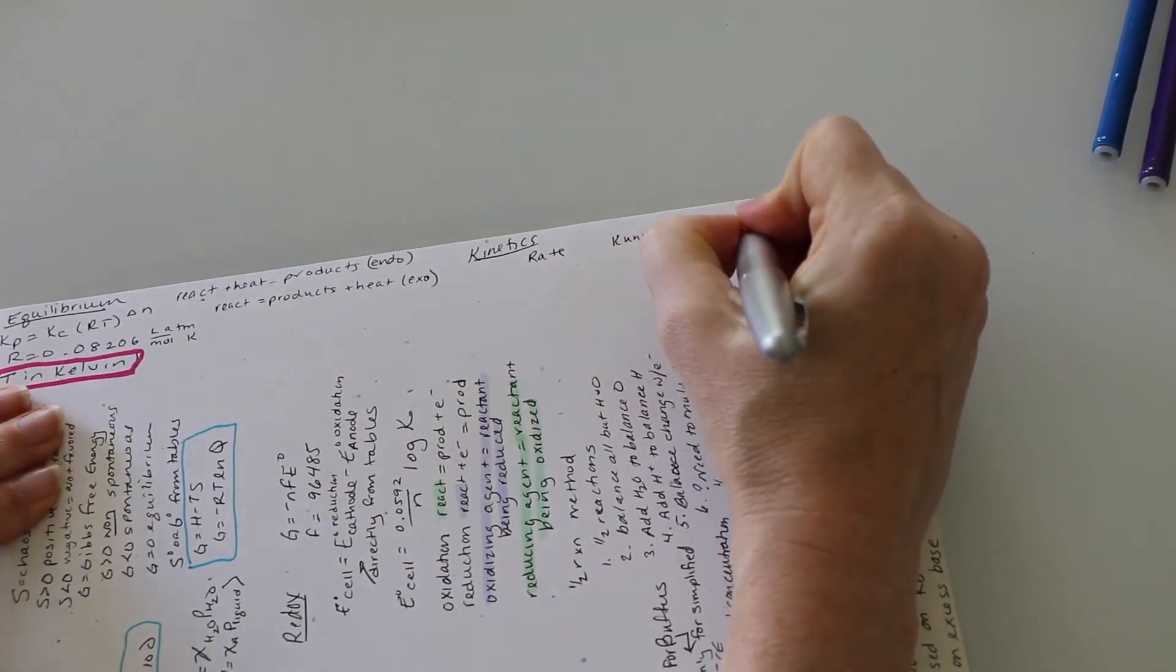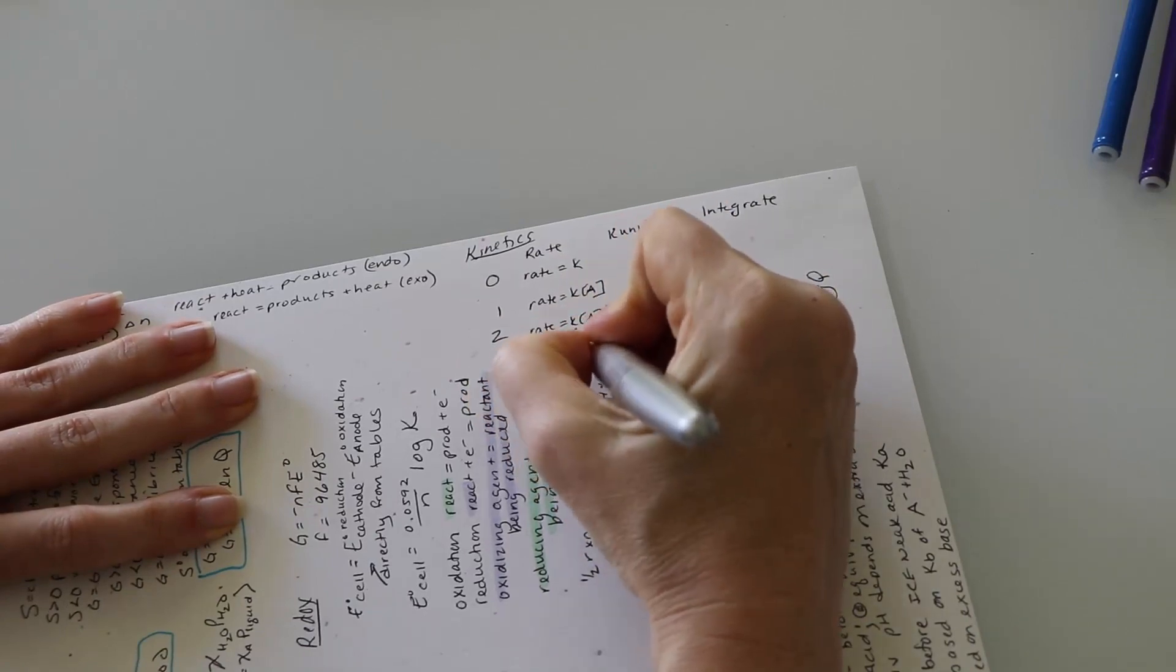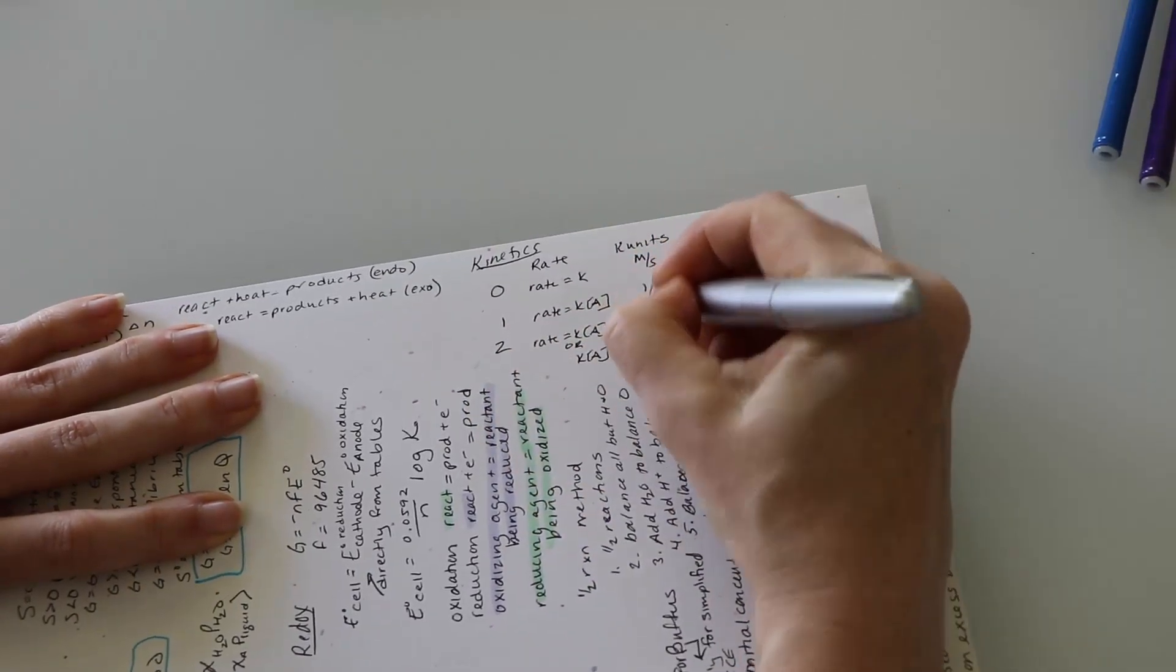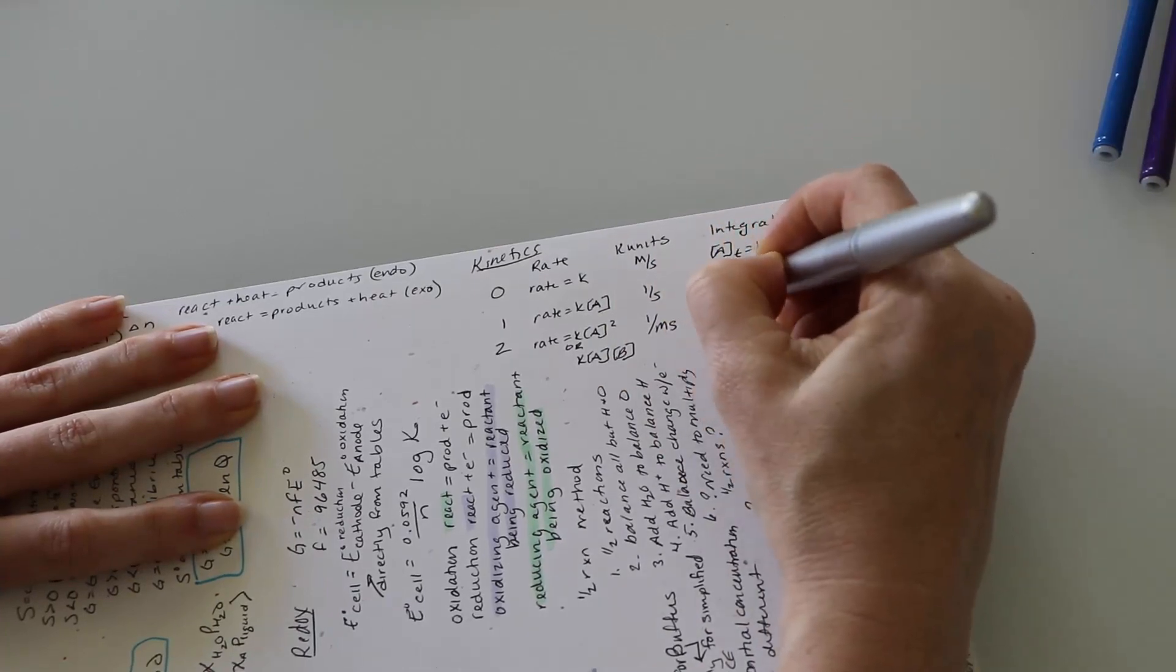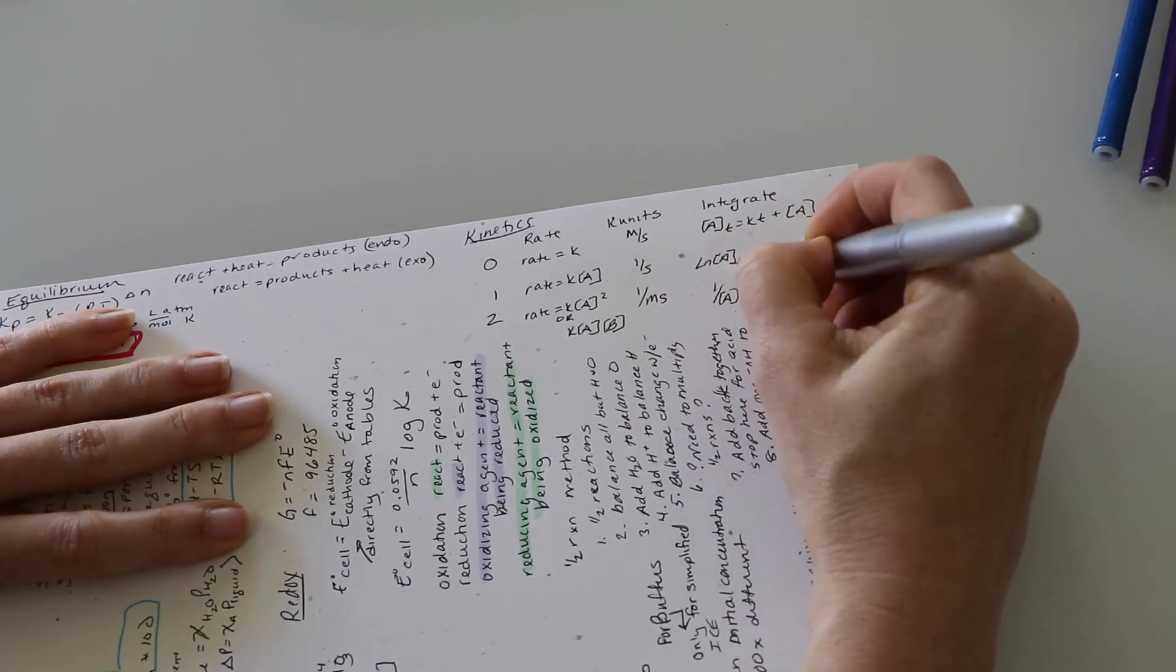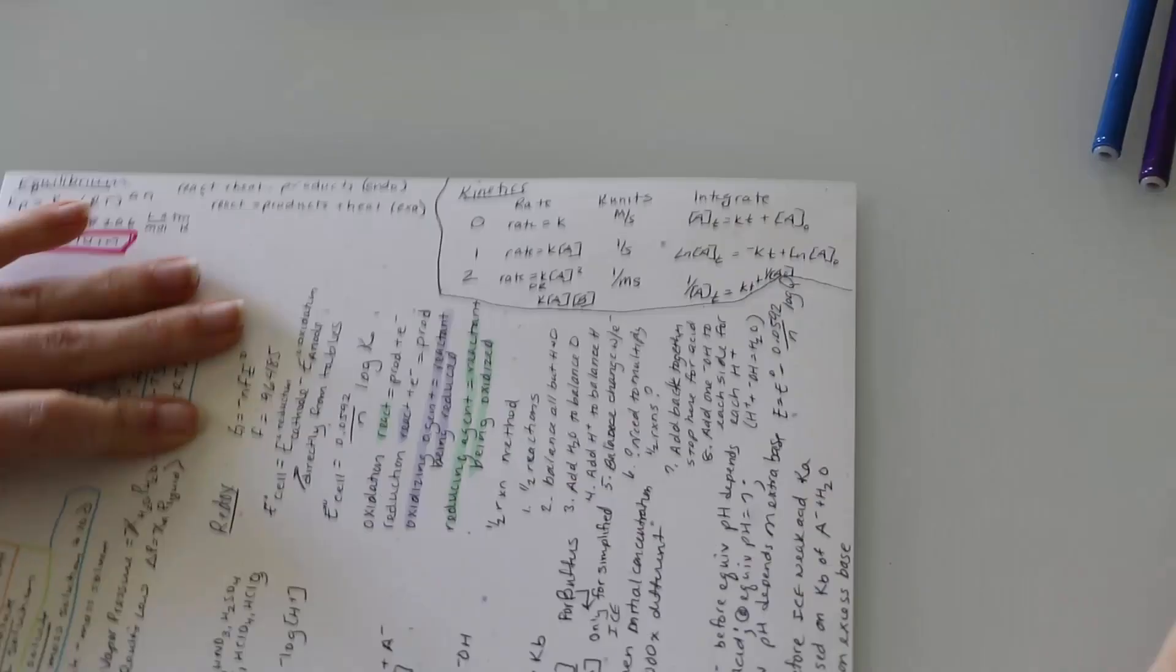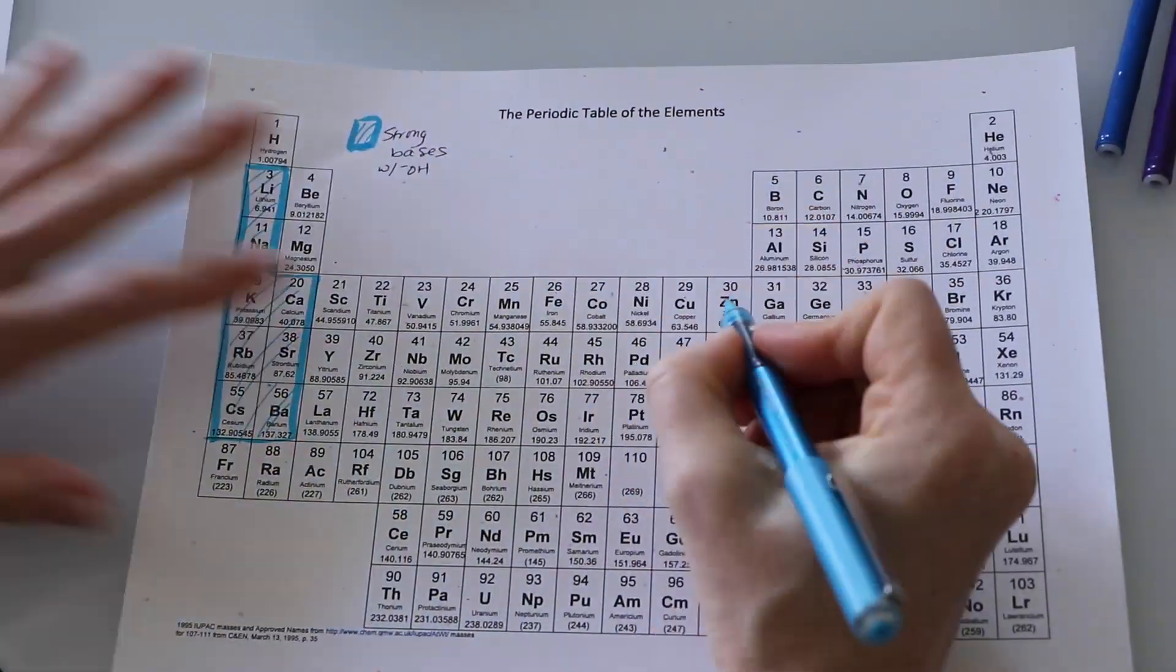Then I'm going to write down my rates table for the kinetics. We have 0, 1, and 2. That means the rate is equal to K or the rate is equal to K times the concentration or K times concentration squared or K times concentration of one to concentration of the other. I have the units of my K as well as the integrated rate laws for each of those orders of reactions.